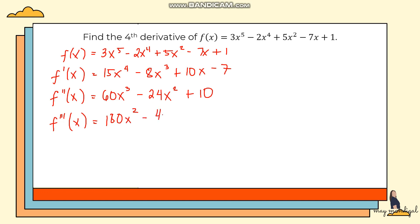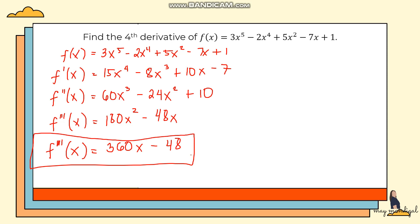For the third derivative we differentiate f''(x), and lastly to get the fourth derivative we differentiate the third derivative, giving f''''(x) = 360x − 48. It is really important that your first derivative is correct, because if you have an error in the first derivative the rest will follow. That is how we get the higher order derivatives.